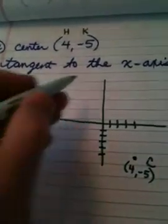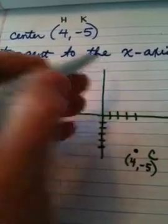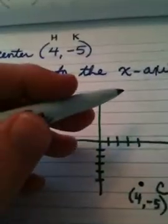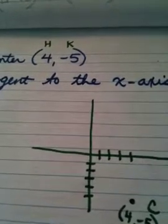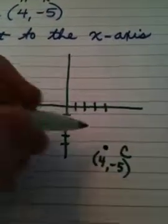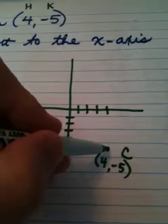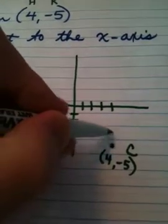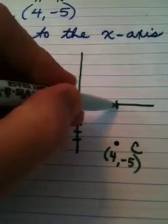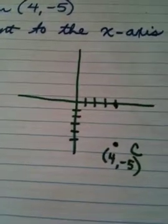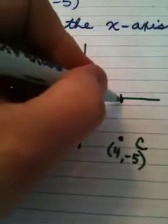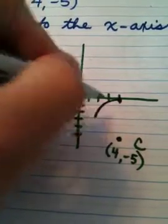My circle is tangent to the x-axis. Tangent to the x-axis means my circle touches the x-axis in one point. So what I'm going to do is I'm going to walk from the center, and I'm going to go directly up to the x-axis and put a point there. You got me?